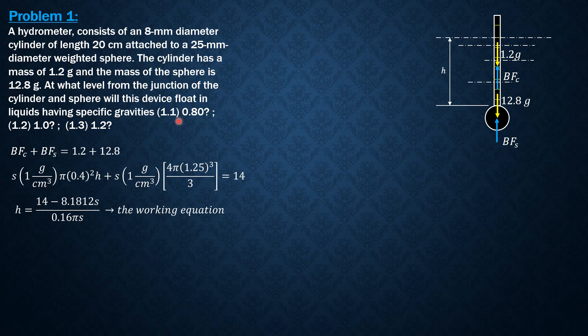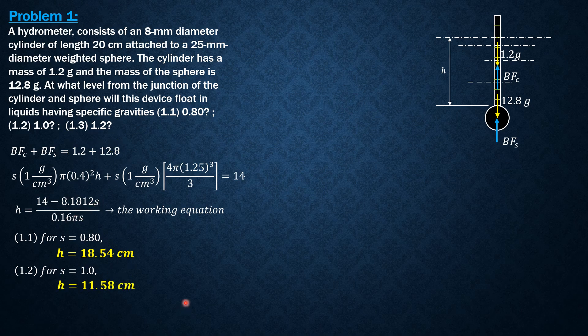So for the first question, when s is 0.8, substitute in this equation 0.8, so we'll get h equals 18.54 cm. And for 1.2, s is 1.0, h equals 11.58 cm. And when s is 1.2, substitute 1.2 here, you'll get h equals 6.934 cm.